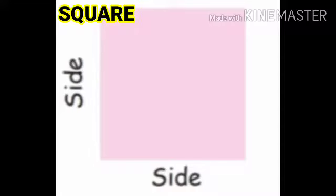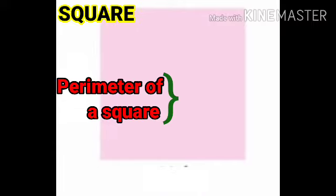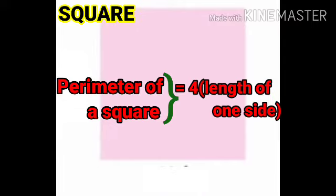Now let's see how to find the perimeter of a square shape. A square has 4 sides that are equal. So to find the perimeter of a square, we add all 4 sides. The formula is: perimeter of a square equals 4 times the length of one side, or 4a.